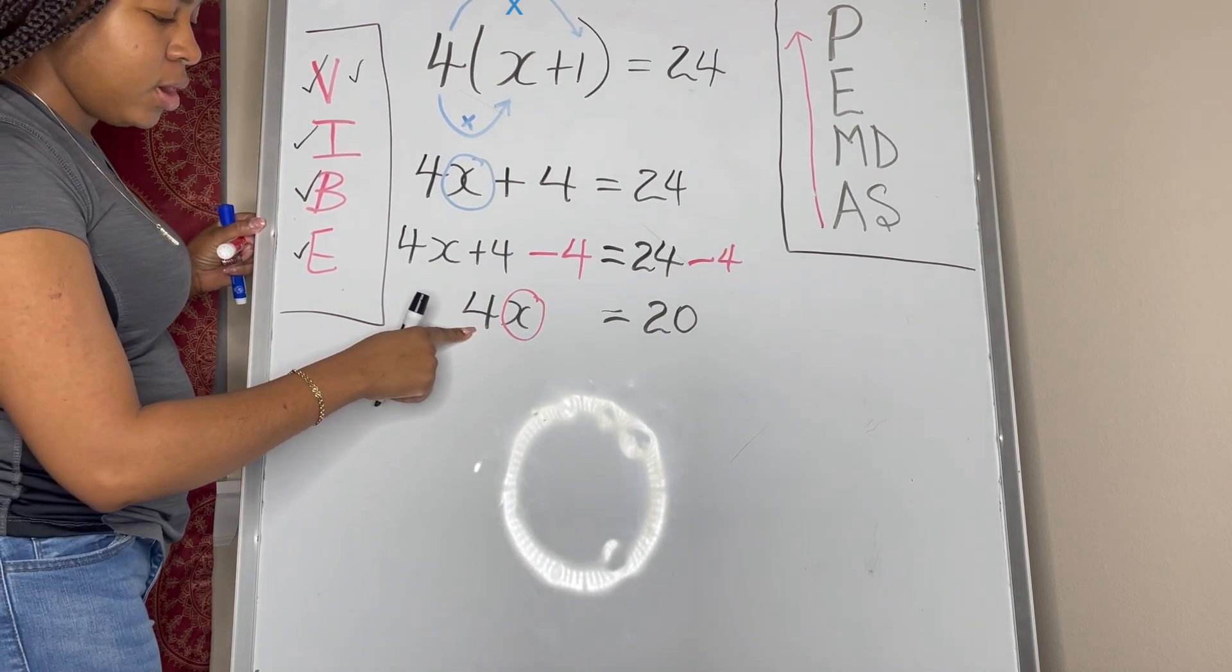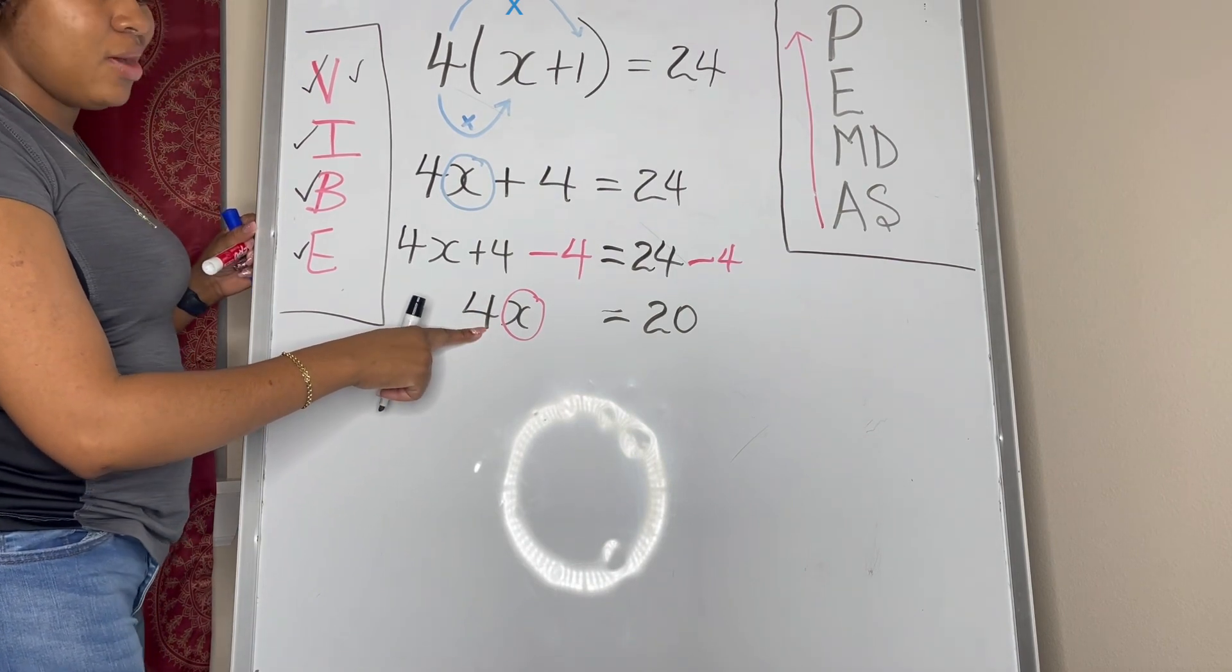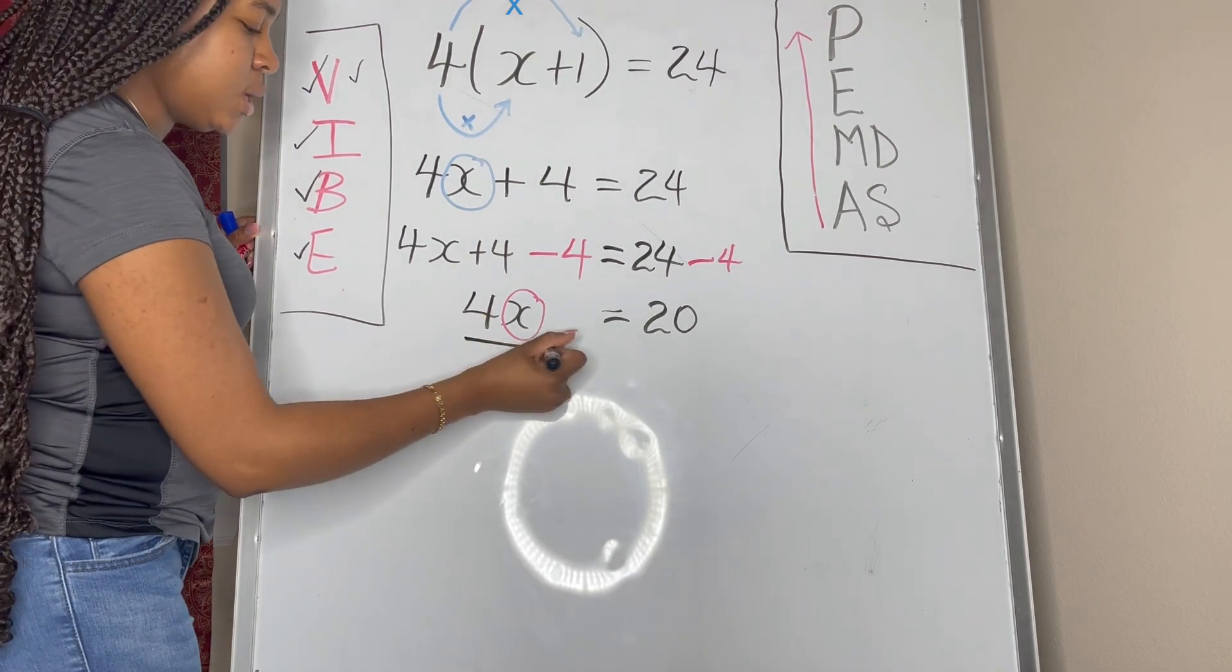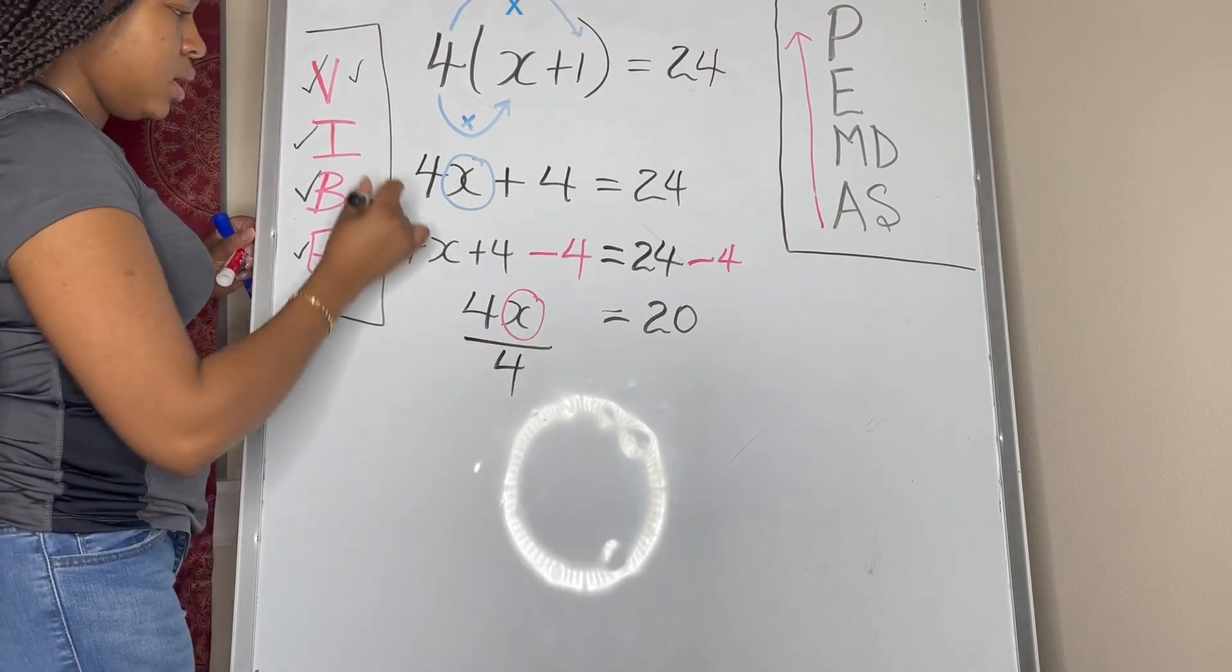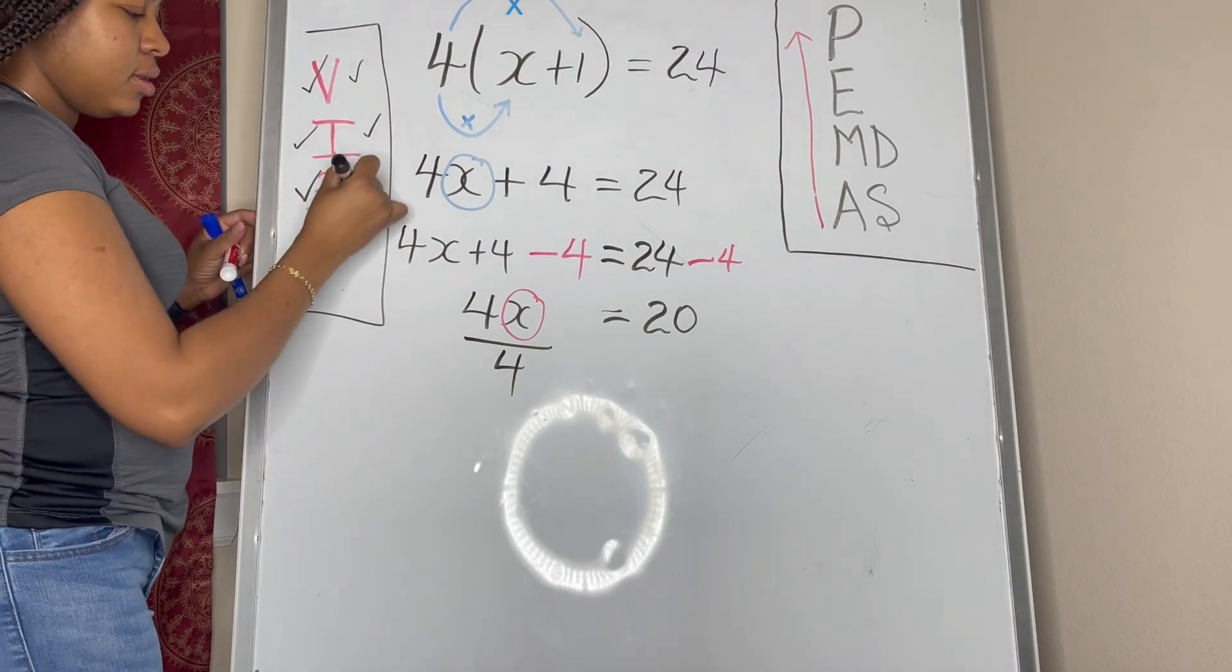So we look and we see 4x, which is just 4 multiplied by x, so the inverse operation that we need to perform to undo this multiplication is division. So we divide this side by 4.